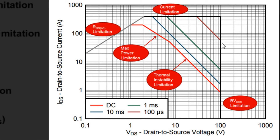The fifth region is the breakdown voltage limitation — simply the breakdown voltage of the FET. This device has a 100-volt BVDSS, which is why this line has been imposed at 100 volts.